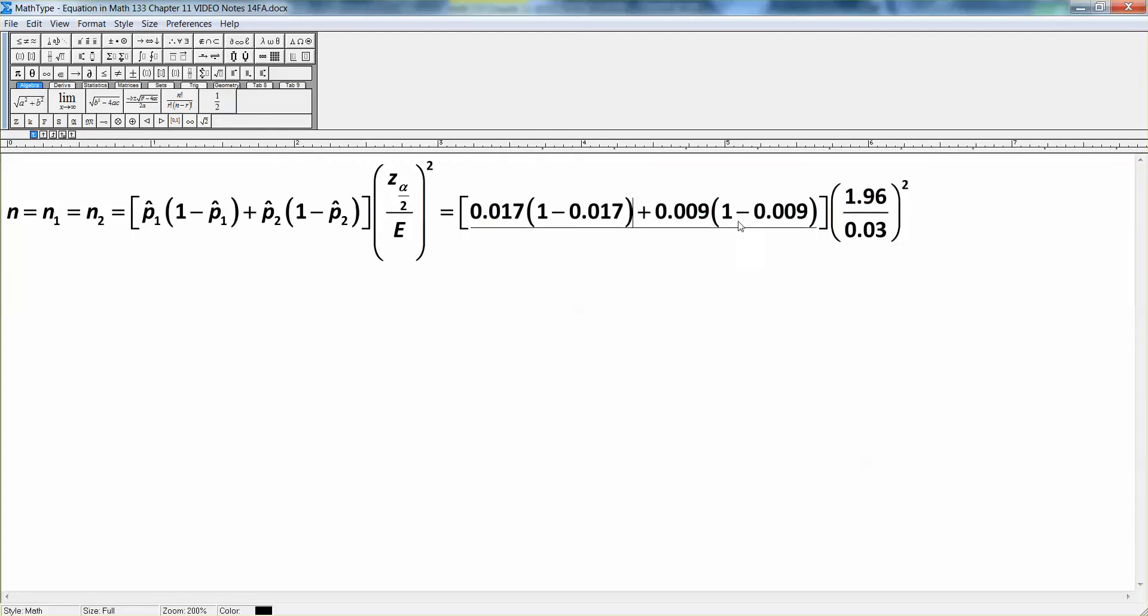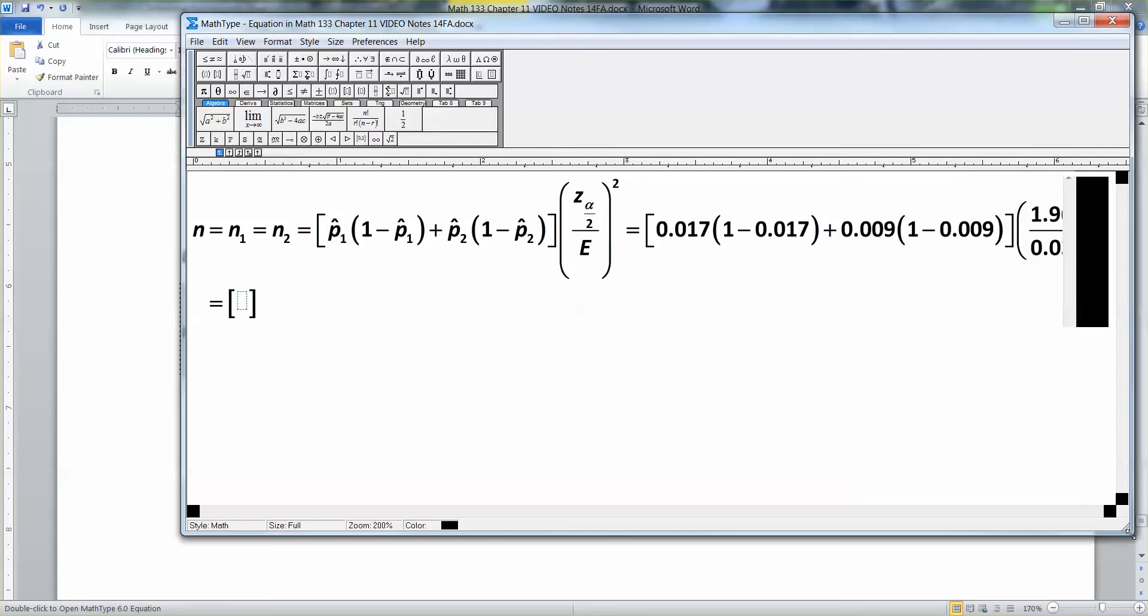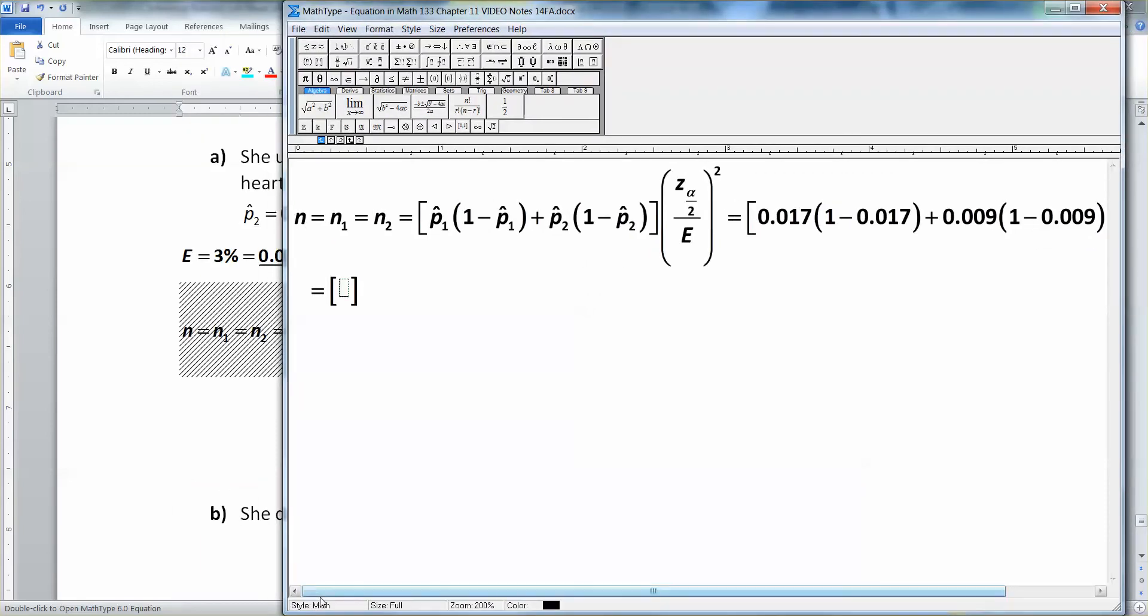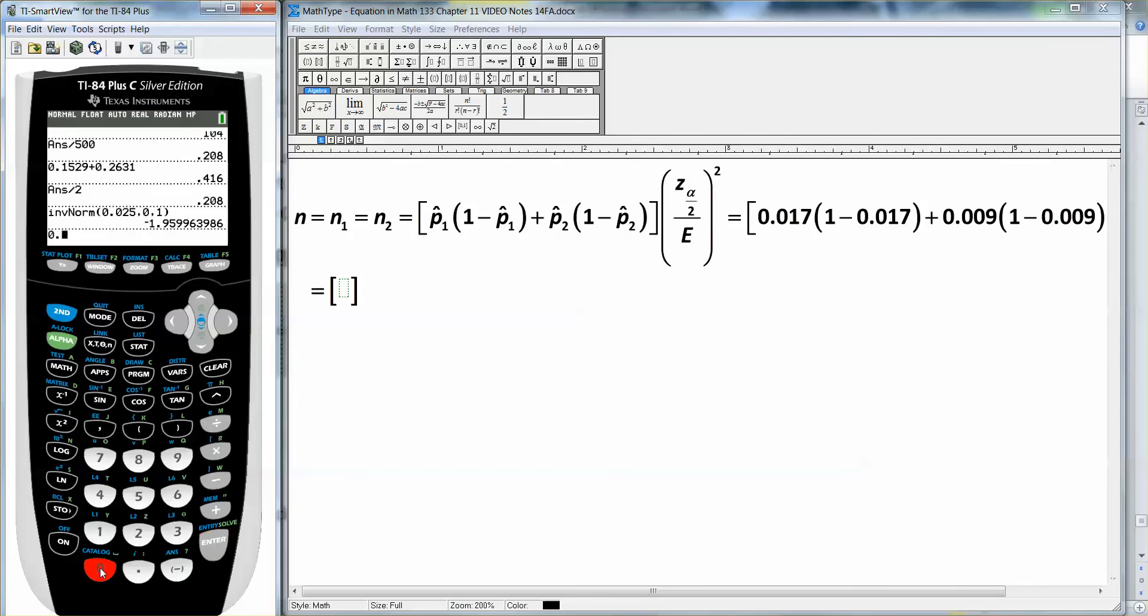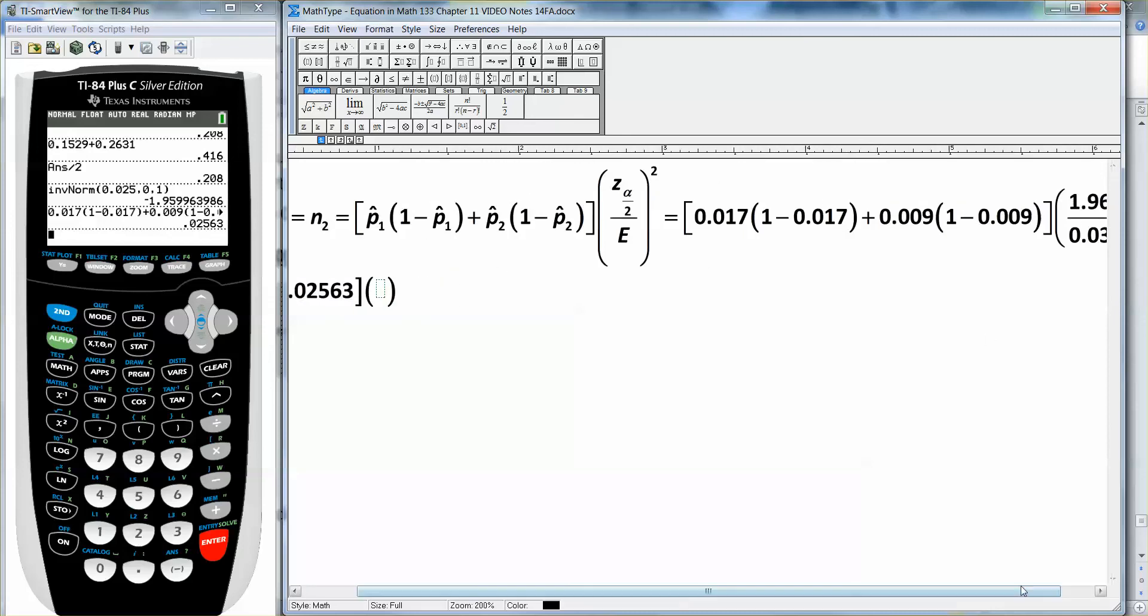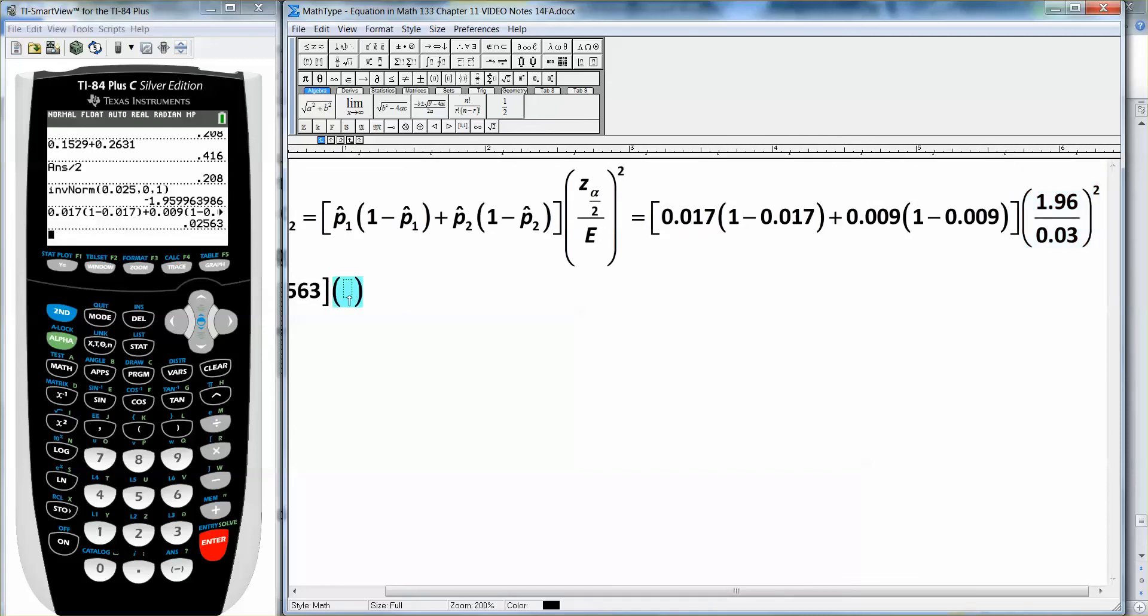So now we're going to have to type all that into a calculator. Now the easier part to do is actually the front. So we'll do that front part kind of on its own. So let's figure what that is. So I'm going to grab a calculator. I'm going to move this kind of over to the side so you can still see it, but I need to leave room for my calculator here. Okay, so I want 0.017 times 1 minus 0.017 plus 0.009 times 1 minus 0.009. And then it puts 0.02563. 0.02563. Okay, so there's that part. And then the back half, I'm just going to leave it alone for right now.